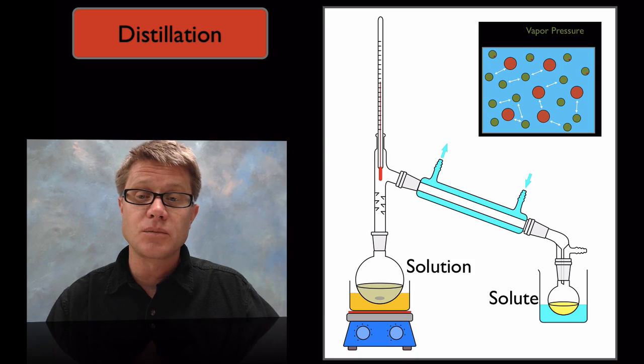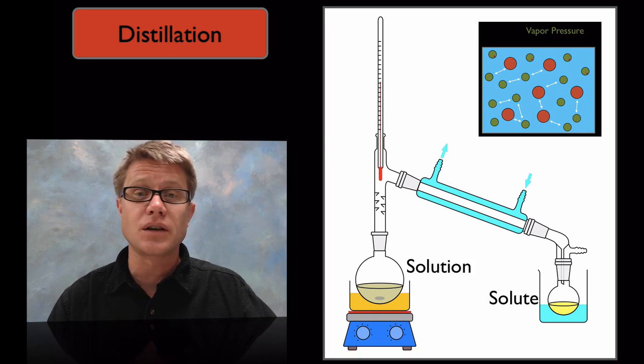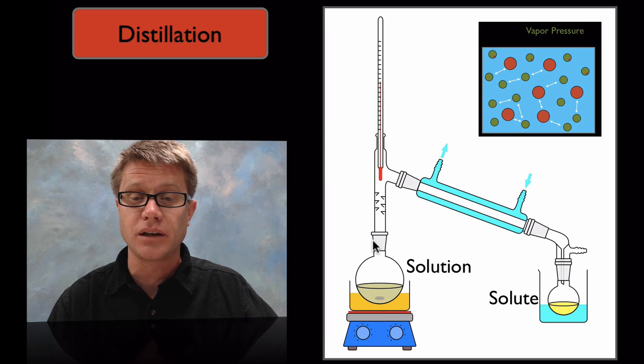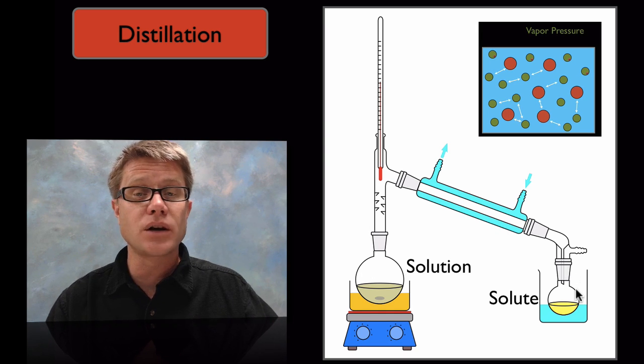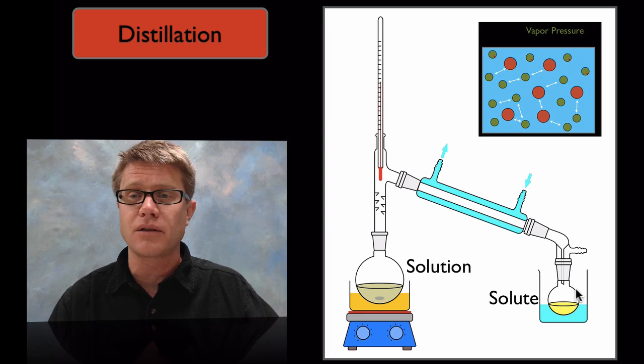And so since they're going to have different vapor pressures, ones that are more volatile, ones that have a higher vapor pressure that are going to evaporate more quickly are going to separate off. Where do we use this distillation process? Aside from making brandy out of wine, we'd use it in oil refining for example to get the different parts out of crude oil.